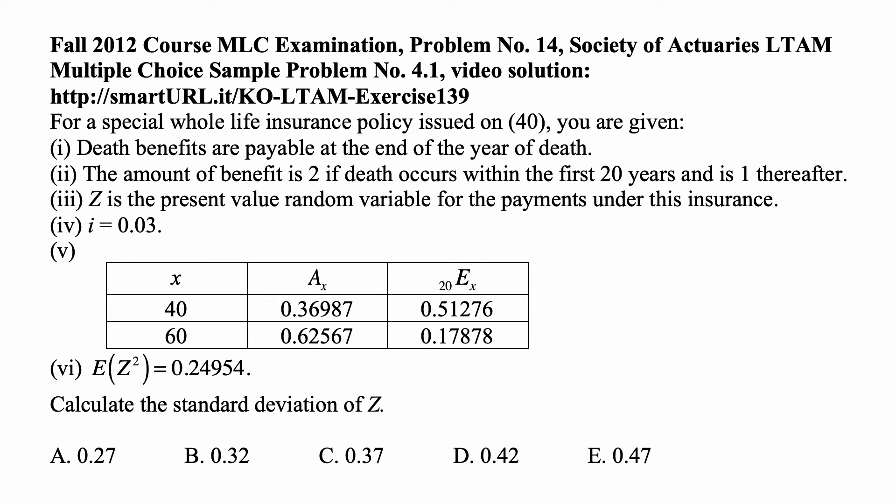Here's a problem for today for exam LTIM. For a special whole life insurance policy issued to a 40-year-old, you are given: death benefits are payable at the end of the year of death. The amount of benefit is 2 if death occurs within the first 20 years and is 1 thereafter. Z is the present value random variable for the payments under this insurance. The interest rate is 3%.